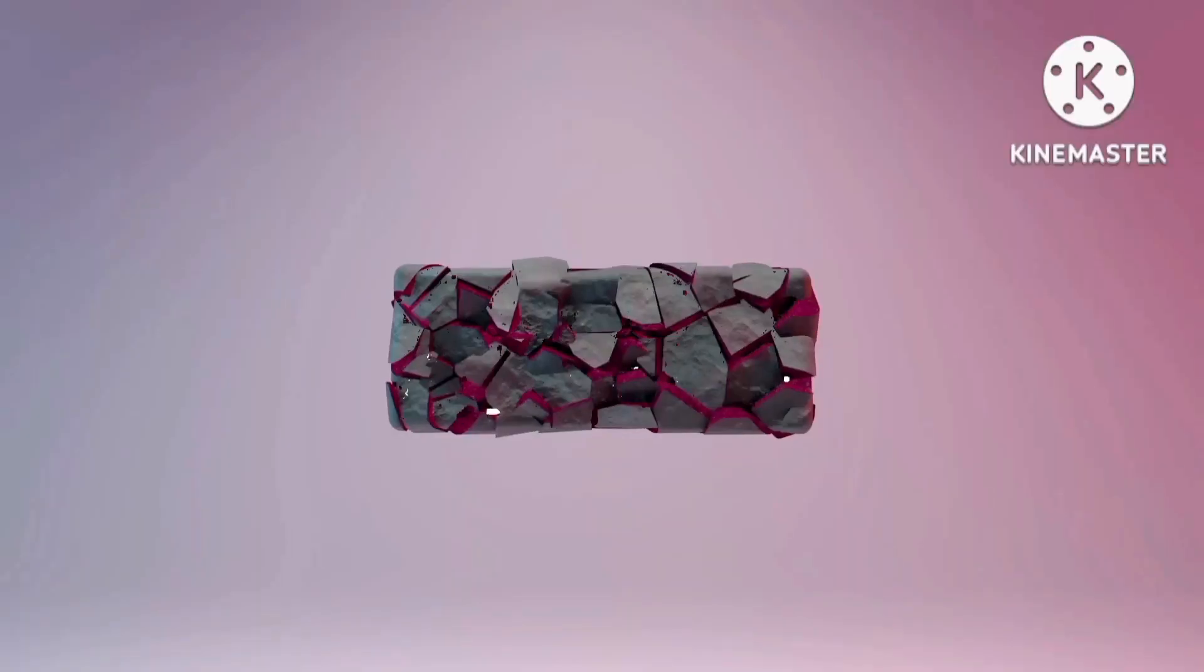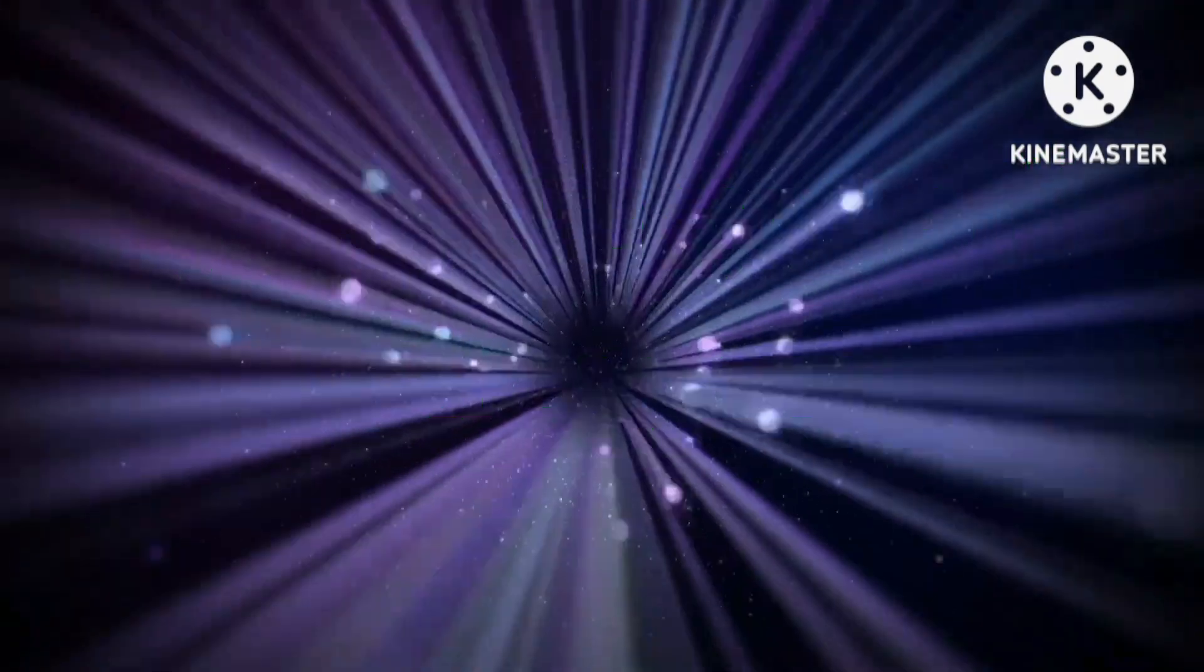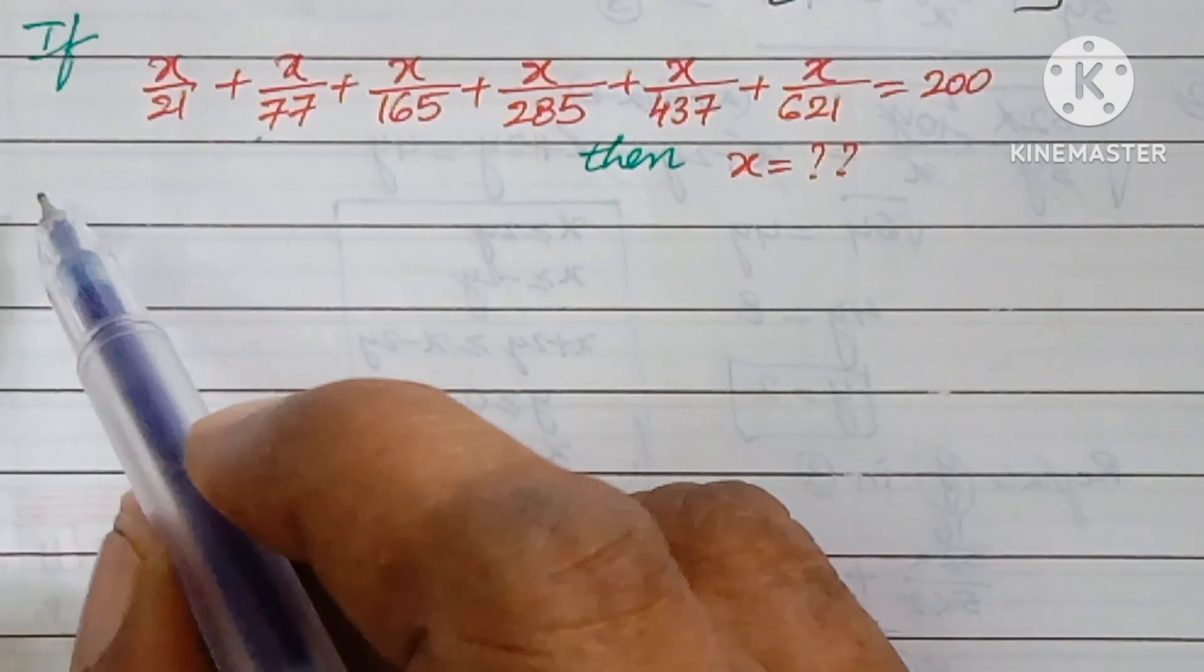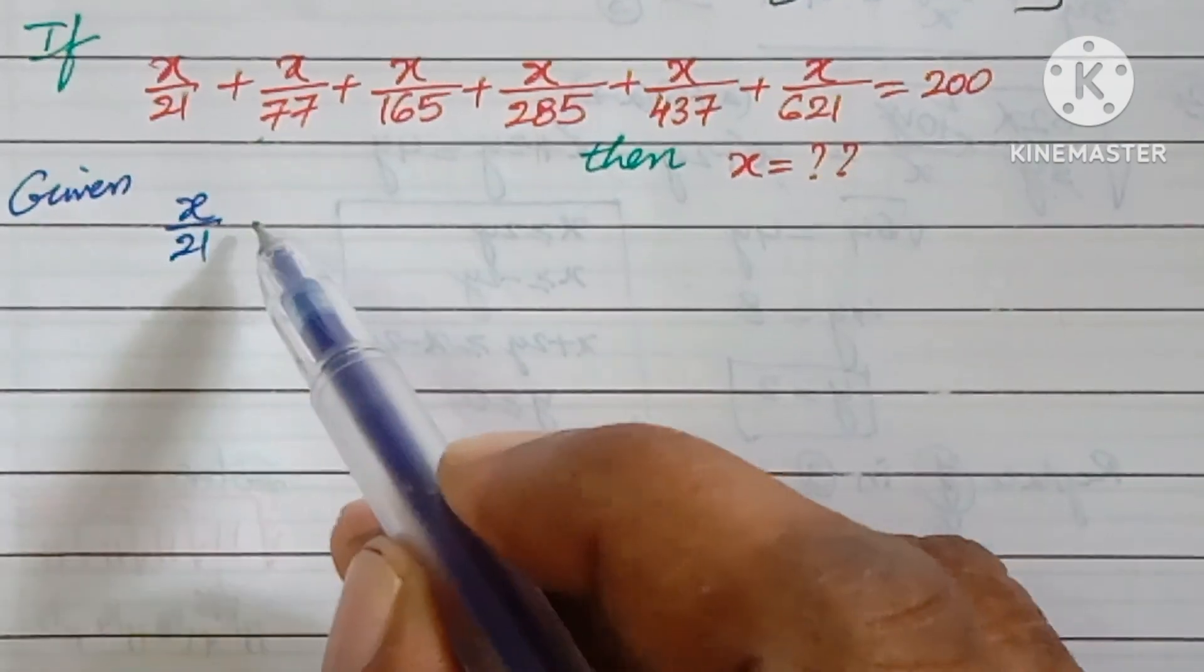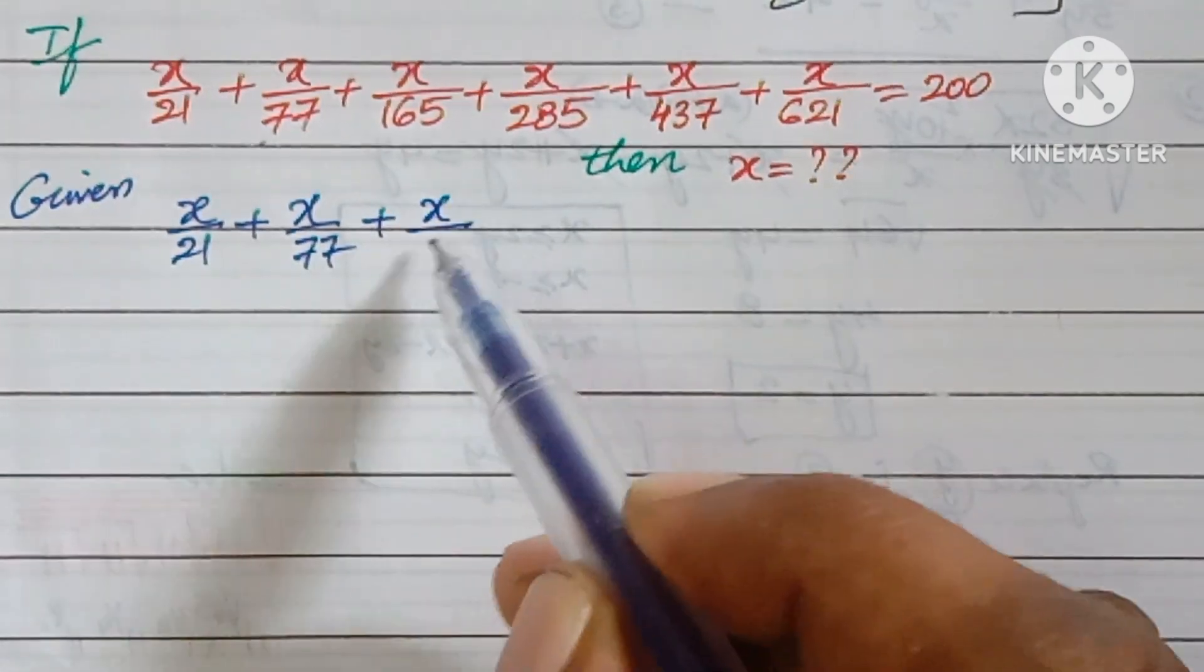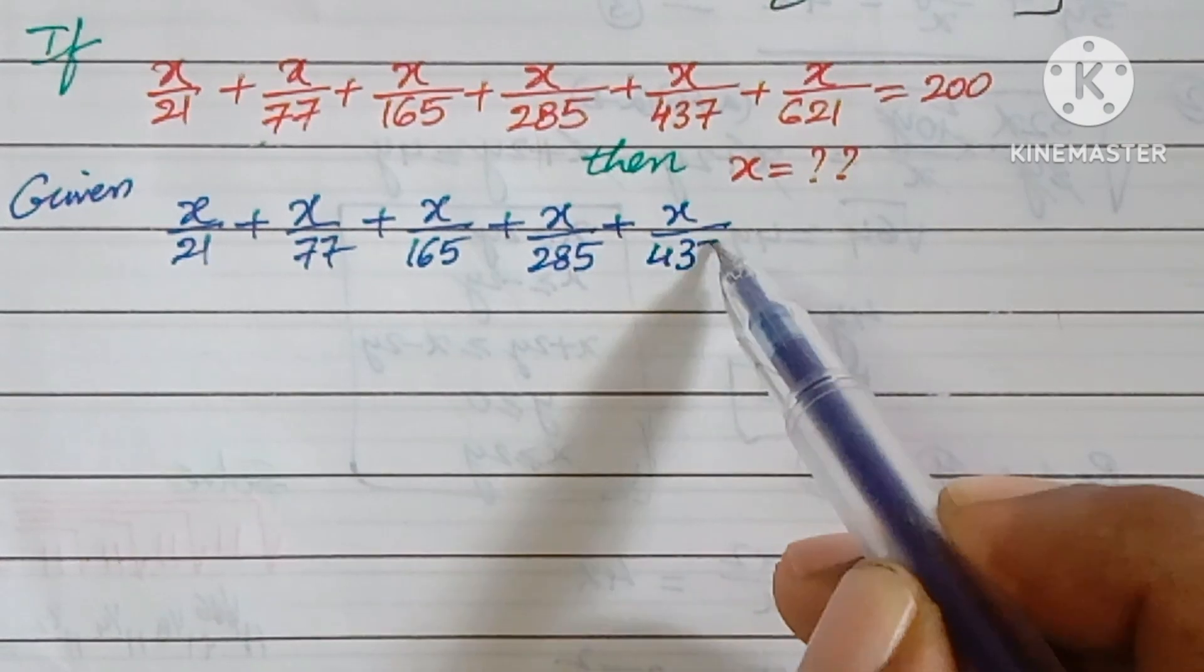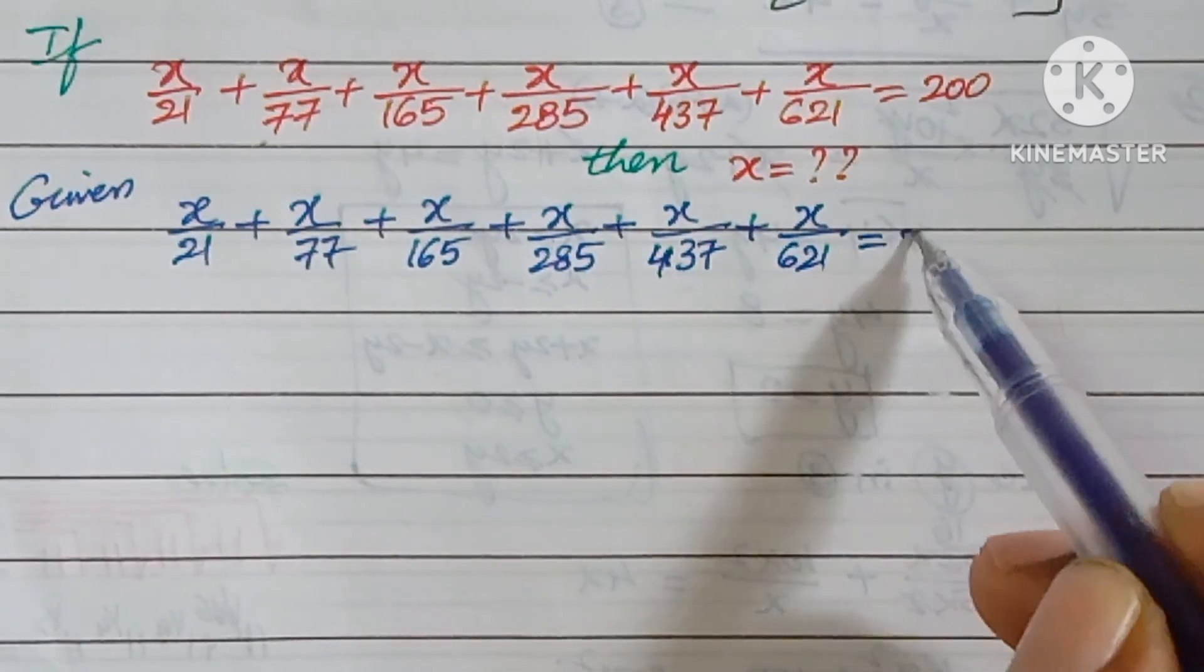So how to solve this problem? First of all, given x/21 + x/77 + x/165 + x/285 + x/437 + x/621 = 200.